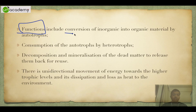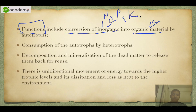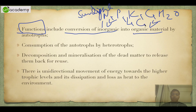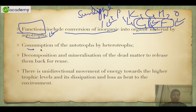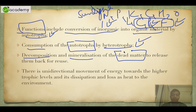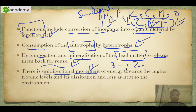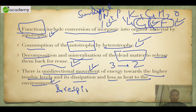The functions of the pond ecosystem include conversion of inorganic compounds into organic compounds. Inorganic includes nitrogen, phosphorus, potassium, carbon, and water. When sunlight hits, chemical reactions convert these into carbohydrates, proteins, and fats — this is done by autotrophs. Then consumption of autotrophs is done by heterotrophs, and finally decomposition and mineralization of dead matter to release them back for reuse is done by decomposers. Energy flow is always unidirectional — it cannot move from a higher trophic level back to a lower one. Energy dissipates as heat and via respiration.